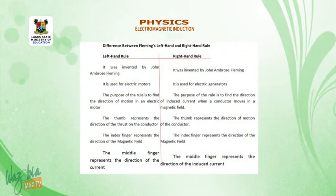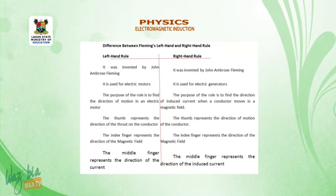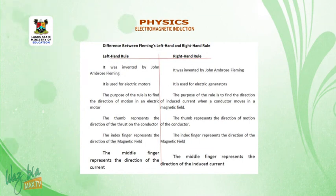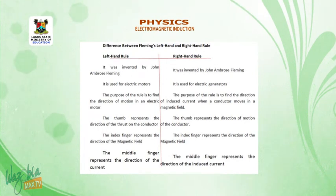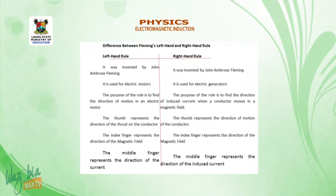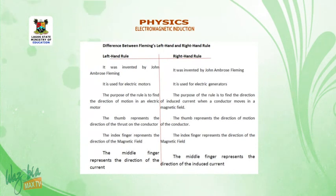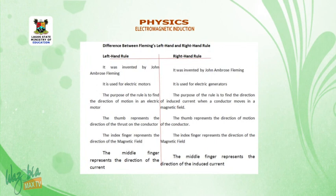Differences between Fleming's left-hand rule and right-hand rule. Under the left-hand rule, it is used for electric motors. Under the right-hand rule, it is used for electric generators. Under the left-hand rule, the purpose is to find the direction of motion in an electric motor. Under the right-hand rule, the purpose is to find the direction of induced current when a conductor moves in a magnetic field. Under the left-hand rule, the thumb represents the direction of thrust on the conductor. Under the right-hand rule, the thumb represents the direction of motion of the conductor.